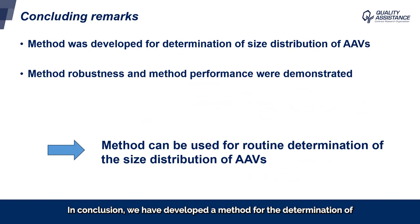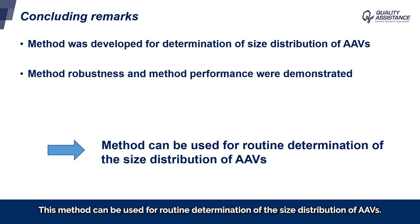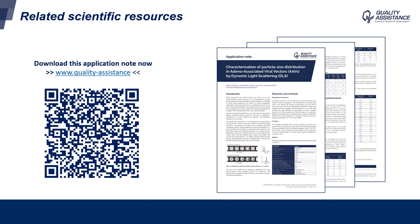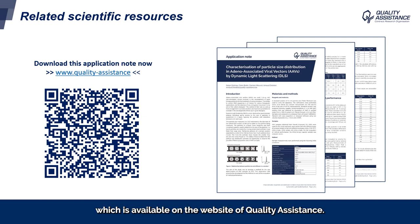In conclusion, we have developed a method for the determination of size distribution of AAVs across different serotypes. The results presented show that the method is robust and that the performance of the method is good. This method can be used for routine determination of the size distribution of AAVs. To read more details about this study, please have a look at our application note, which is available on the website of Quality Assistance. Thank you.